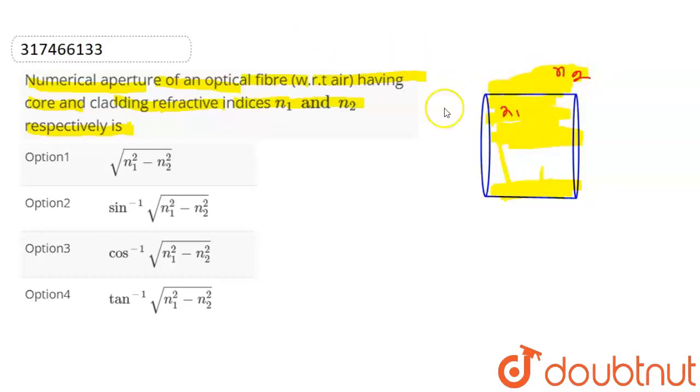So the light comes and is incident. This light is incident with this angle as i and this angle as r.